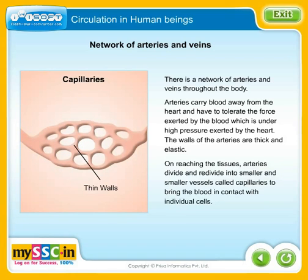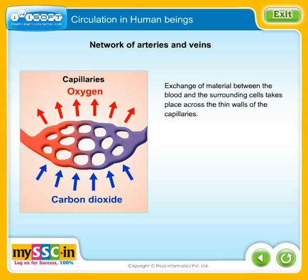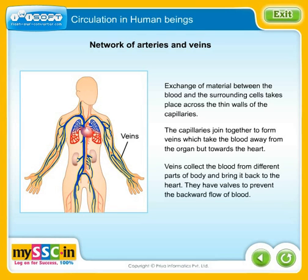On reaching the tissues, arteries divide and redivide into smaller and smaller vessels called capillaries, to bring the blood in contact with individual cells. Exchange of material between the blood and surrounding cells takes place across the thin walls of the capillaries. The capillaries join together to form veins, which take the blood towards the heart. Veins collect blood from different parts of the body and have valves to prevent the backward flow of blood.